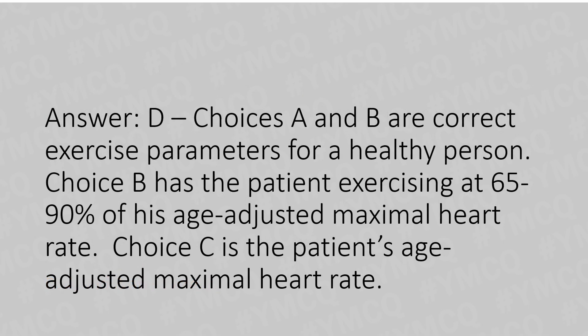Option D, A and B are correct exercise parameters for a healthy person. Choice B has the patient exercising at 65% to 90% of the age-adjusted maximal heart rate. Choice C represents the patient's age-adjusted maximal heart rate, not a target exercise range.